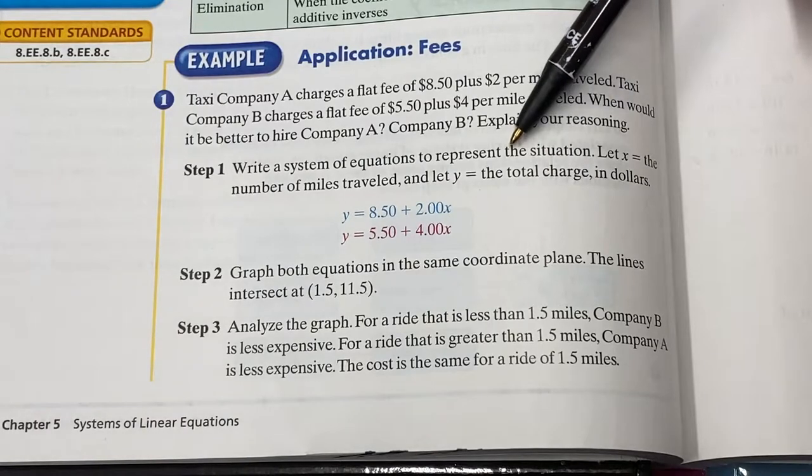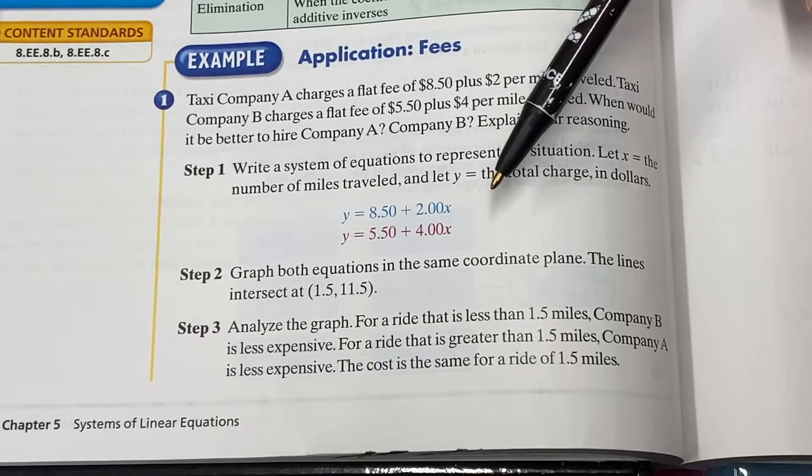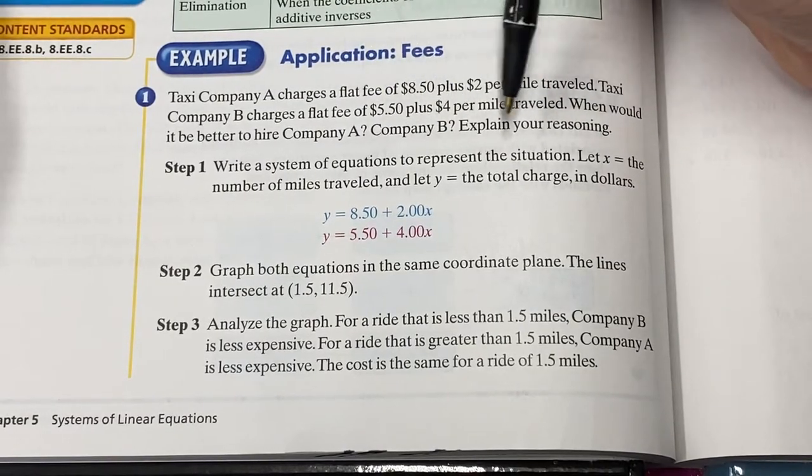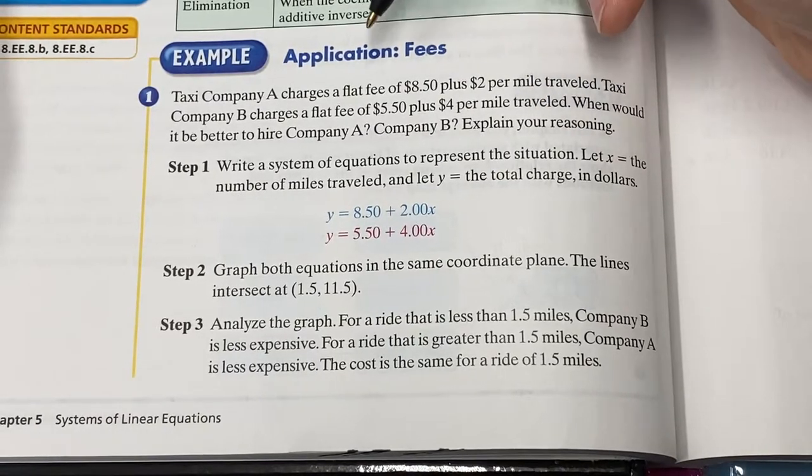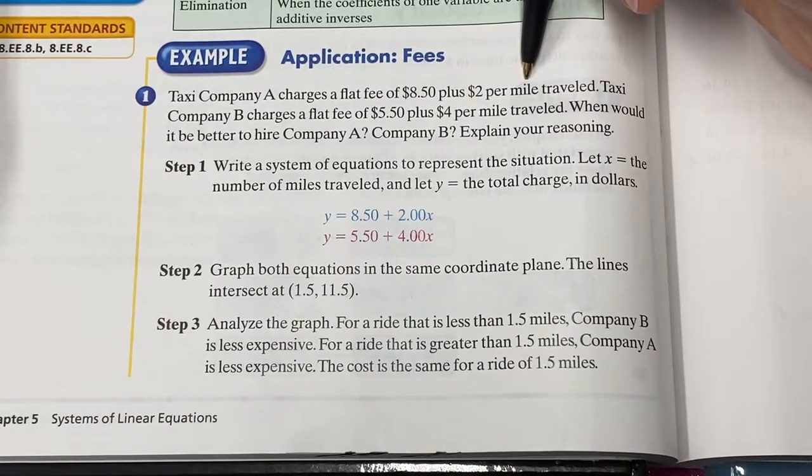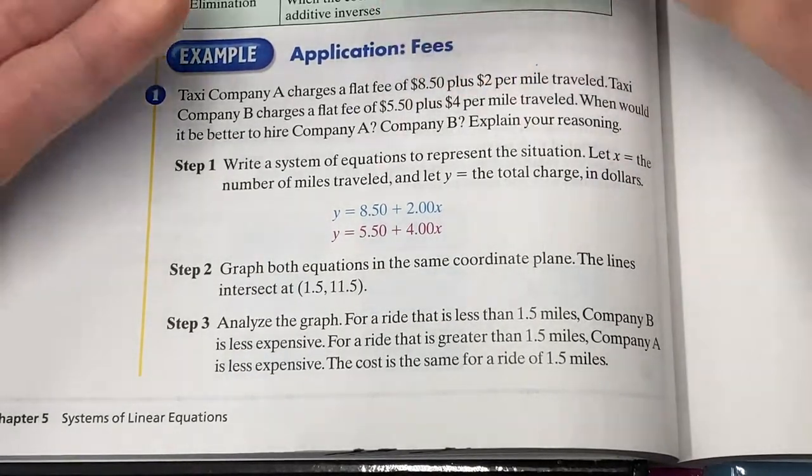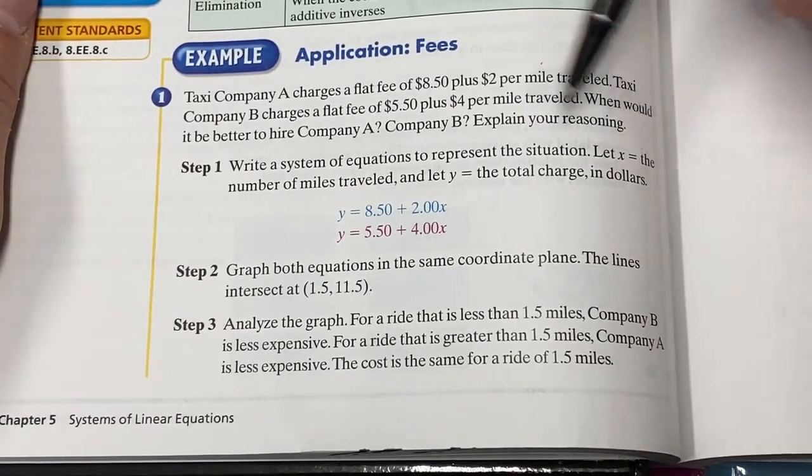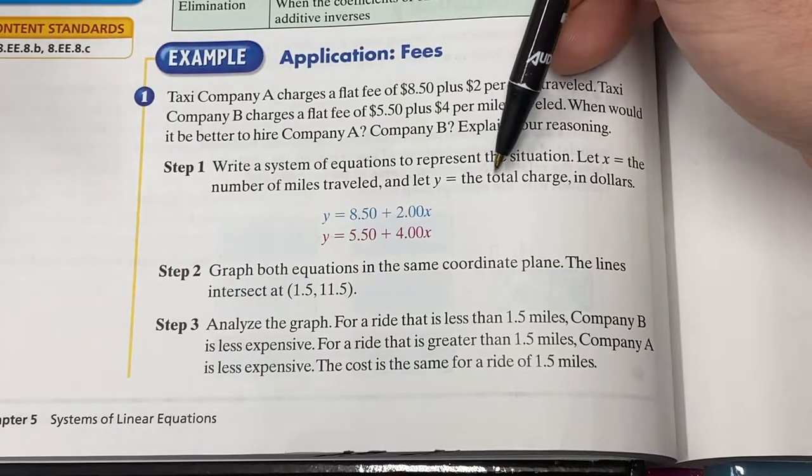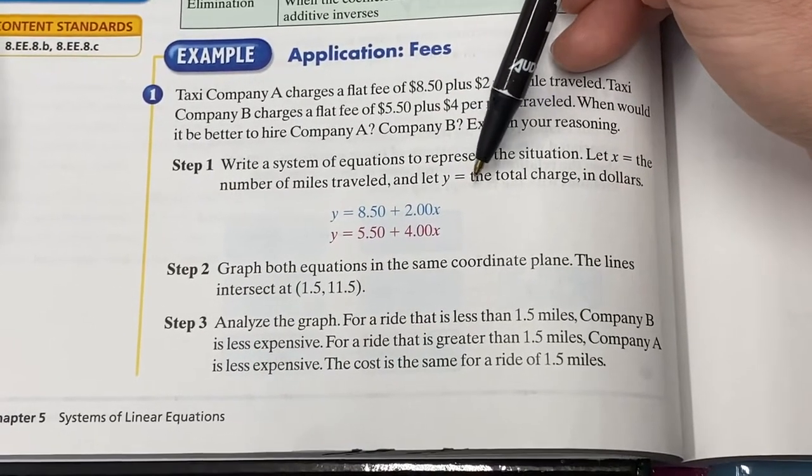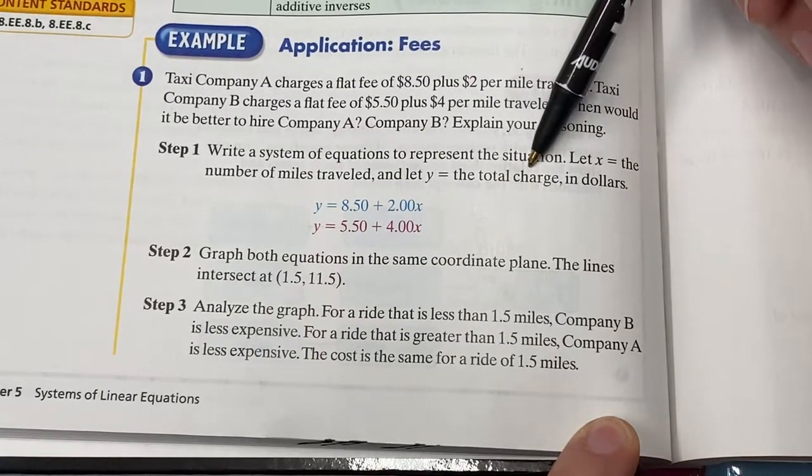Well, the way you are going to answer this question is by figuring out when will they cost the same? So obviously with word problems, we always want to write a let statement. What are the unknowns in this problem? Well, the first unknown is how many miles you're going to be traveling because how much your total charge is going to be, no matter which taxi company you choose, it's going to depend on how far you drive. So that's why they have here, let X equal the number of miles traveled. The other unknown here then is whatever that total charge is going to be. So they have let Y equal the total charge.